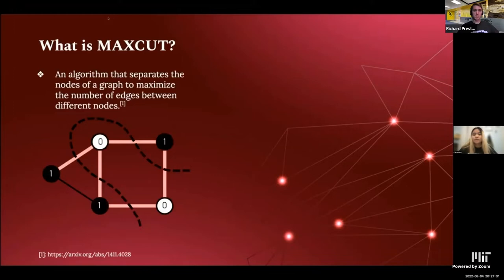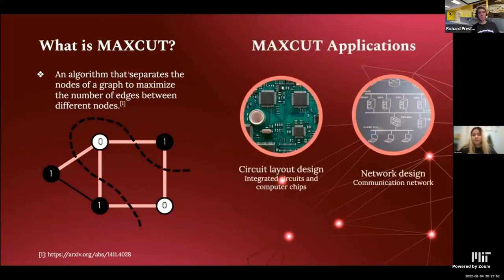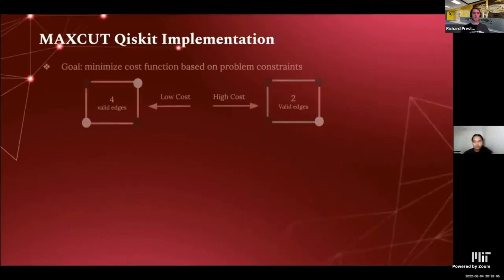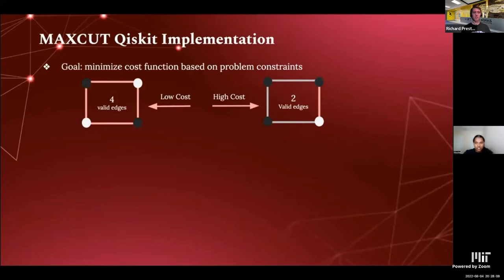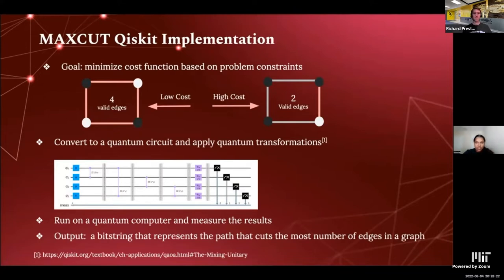Max cut is an algorithm that separates the nodes of a graph to maximize the number of edges between the partitions. The edges connecting nodes on opposite sides are counted, while edges connecting nodes on the same side are not. The max cut problem has applications in circuit layout design, which creates integrated circuits and computer chips, and network design, which creates communication networks. When implementing our QAOA, our aim is to minimize the cost function based on problem constraints — the path that cuts through the most edges will have a lower cost. We can do this classically by optimizing our parameters for the rotation gates, then create a quantum circuit in Qiskit to apply the quantum transformations necessary to bring our qubits to the solution state, run it on a quantum computer, and measure the results as a bit string representing the path that cuts the most edges.